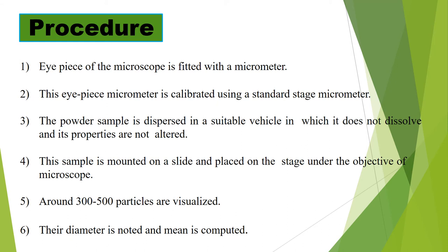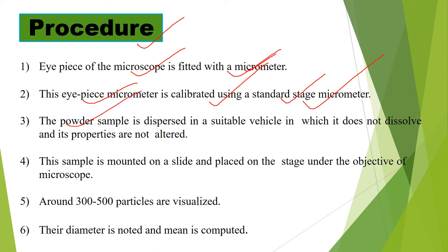Now let us understand the procedure for calculating particle size. First, the eyepiece of the microscope is fitted with the micrometer. The eyepiece micrometer is calibrated using a standard stage micrometer. The powder sample is then dispersed in a suitable vehicle such that it is not dissolved and its properties are not altered.